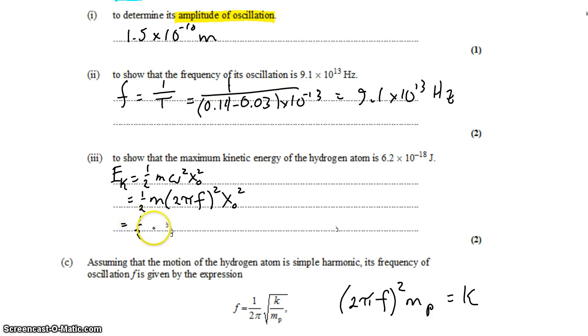Plugging in all the things we know, the mass is 1.7 times 10 to the negative 27. That's the mass of the hydrogen atom, and that's given to us. It's also roughly the mass of a proton, so you could use that as well. Times 2 pi times the frequency, which we found in part 2. All of that squared times the amplitude squared. And you plug that into your calculator, you should get 6.2 times 10 to the negative 18 joules.